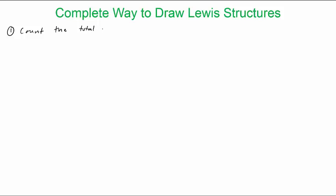This is a tutorial on how to draw Lewis structures, and we're going to try to do this in the least number of steps. It follows closely with the textbook as well, so make sure you check out those pages. So the very first step, the most important step, if you're ever going to draw a Lewis structure, is to count the total number of valence electrons. I like to abbreviate this as VE.